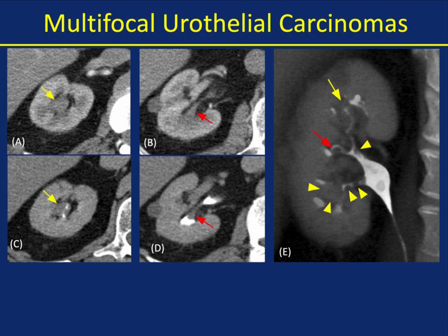We described how TCCs can be small, they're best seen typically on excretory phase, and they can be multiple. We do make the point, correctly so, that the best phase for seeing TCC is in the excretory phase.